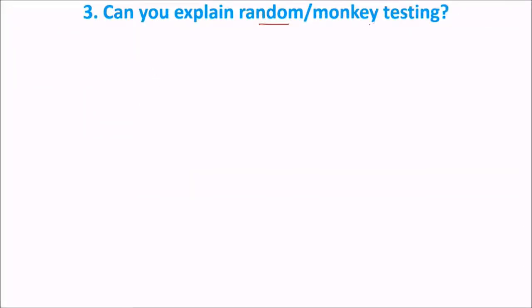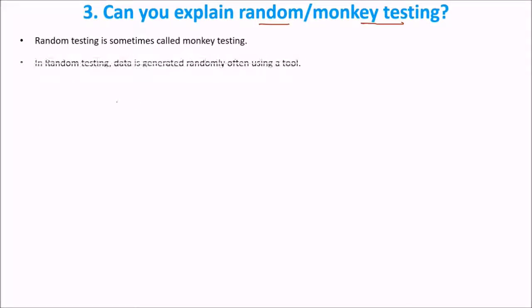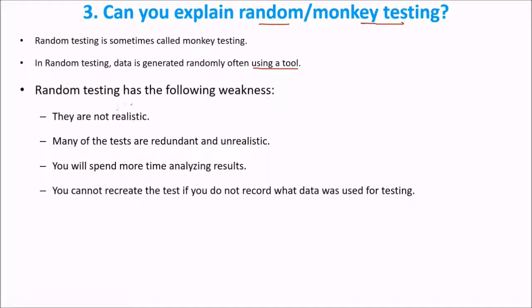Can you explain random or monkey testing? You know, a monkey has no set pattern — it can go from one branch of a tree to another. Random testing is also known as monkey testing, and random test data is generated randomly, often using a tool. Random testing has certain weaknesses: the tests are not realistic, many are redundant, you spend more time analyzing results, and you may not be able to recreate the problem if you don't record the data used for testing.